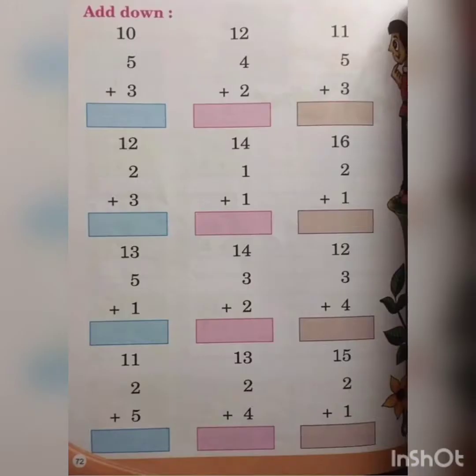And by using the same method, you can turn to page number 72 and you can add down 3 sets of numbers this time. Look at the first one. You can see 10, 5 and 3. So we are going to add these numbers together.